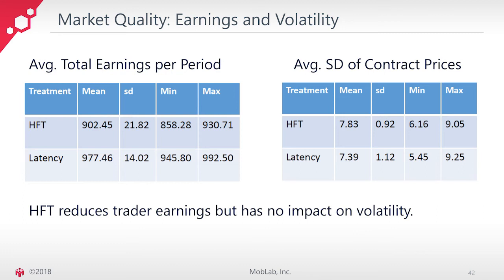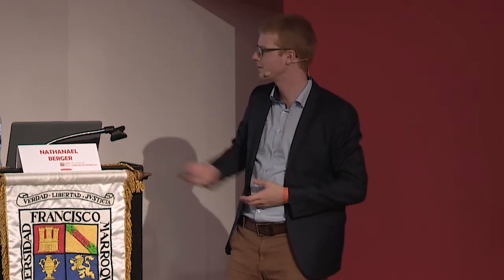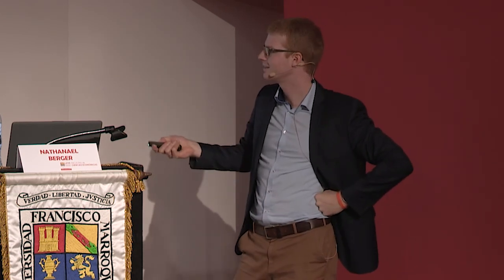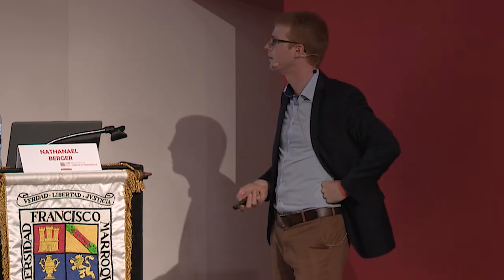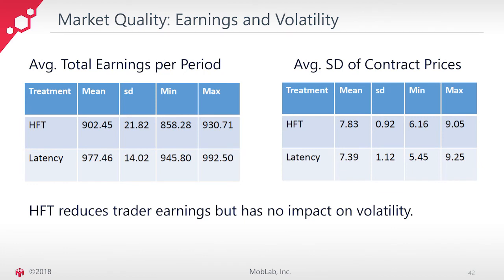If we look at subject earnings — how much money students made — it's not surprising that in the control group they made slightly more money, about less than 10% more. There was a statistical difference between the two groups, which is not surprising given how we designed the market. So there's definitely some potential for exploitation if subjects don't even know there's high-frequency trading and act accordingly. But for volatility — how volatile the prices were — there was again no statistical difference between the two treatments.